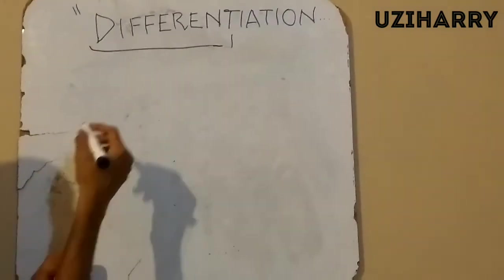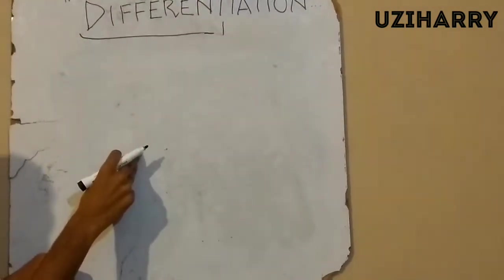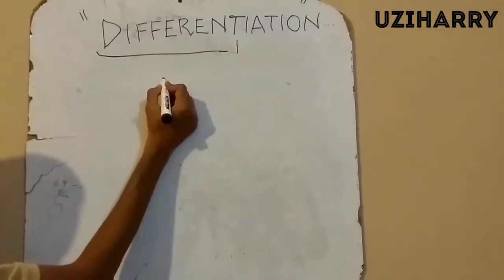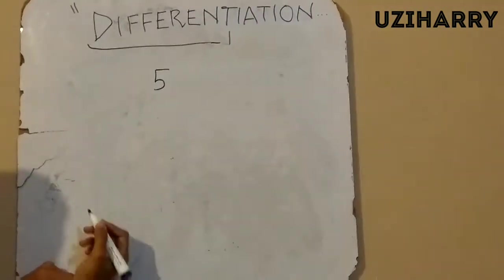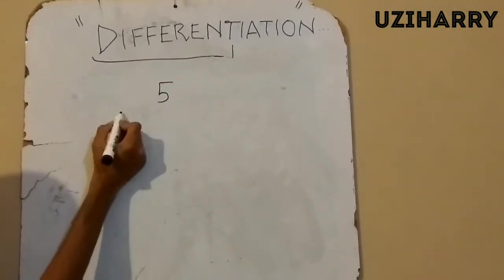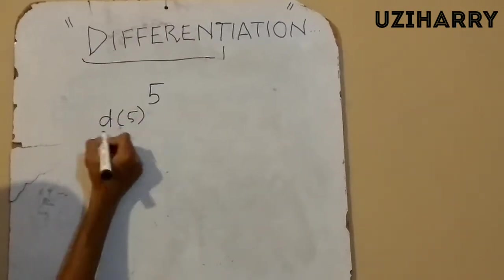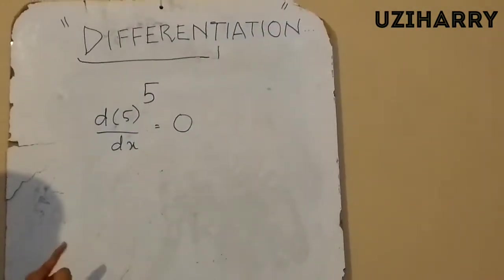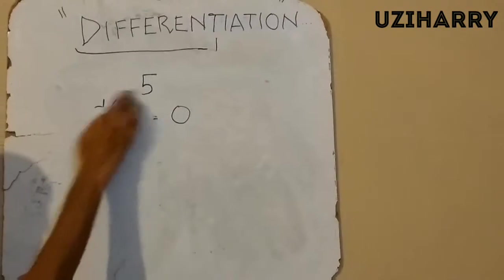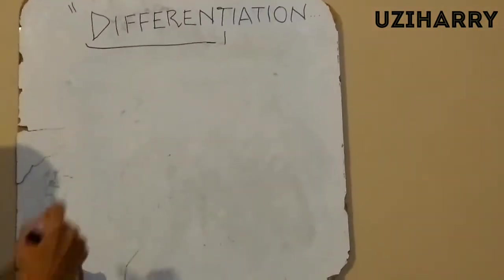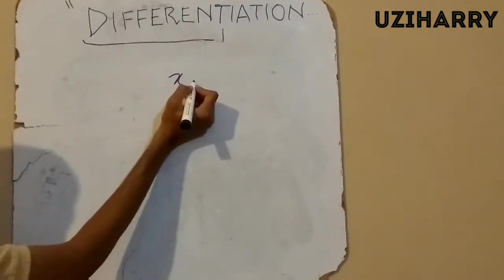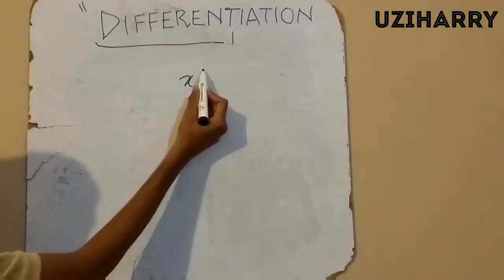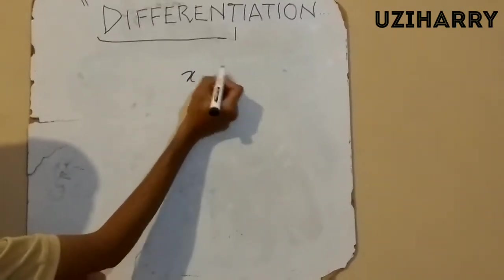First I will give you some examples, then we will understand how to differentiate given expressions or equations. If we write 5, it is a constant, and the derivative of any constant is always 0. If we write any variable, differentiation is the process in which the power comes down to the coefficient with one reduction in power, so its power becomes 1.